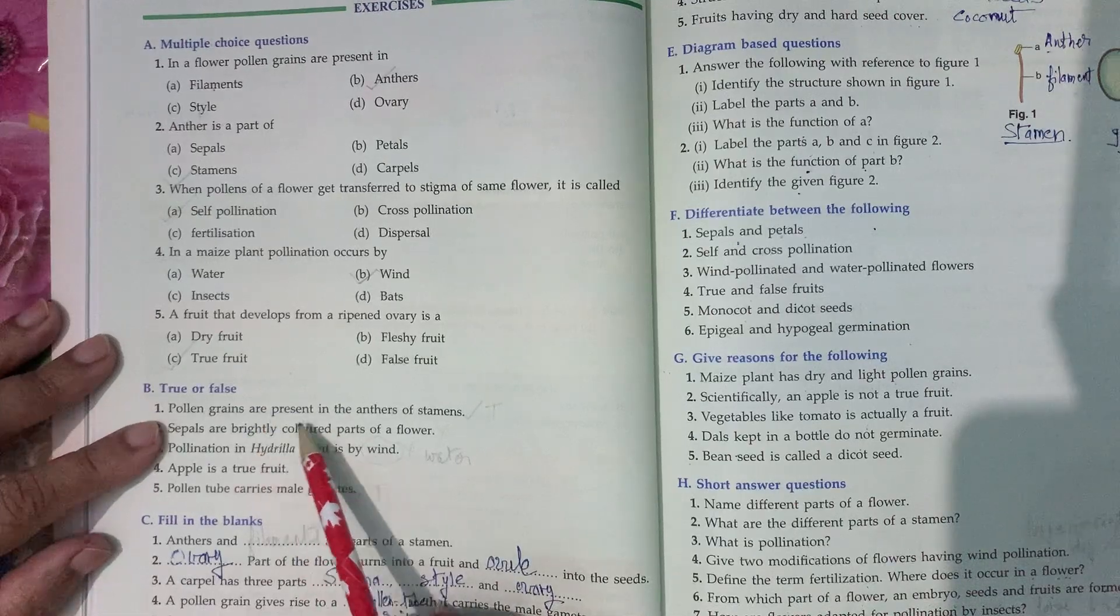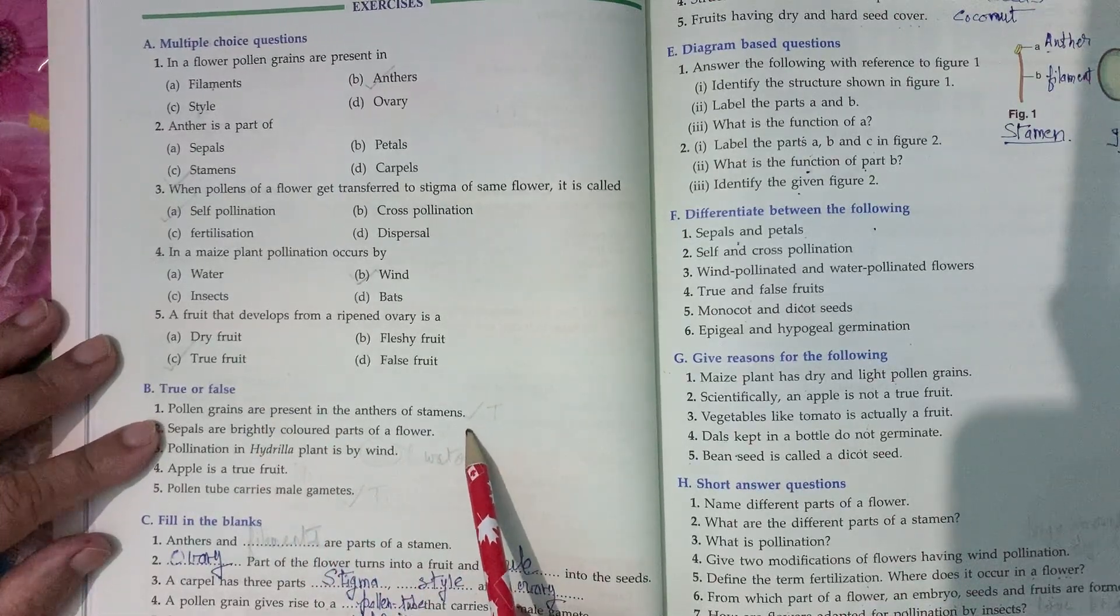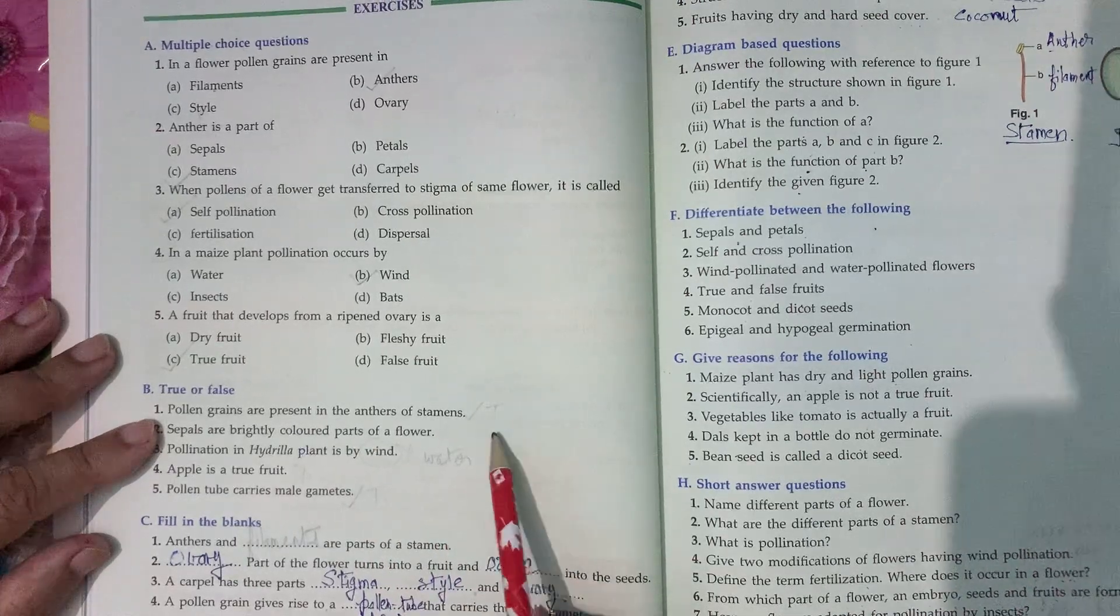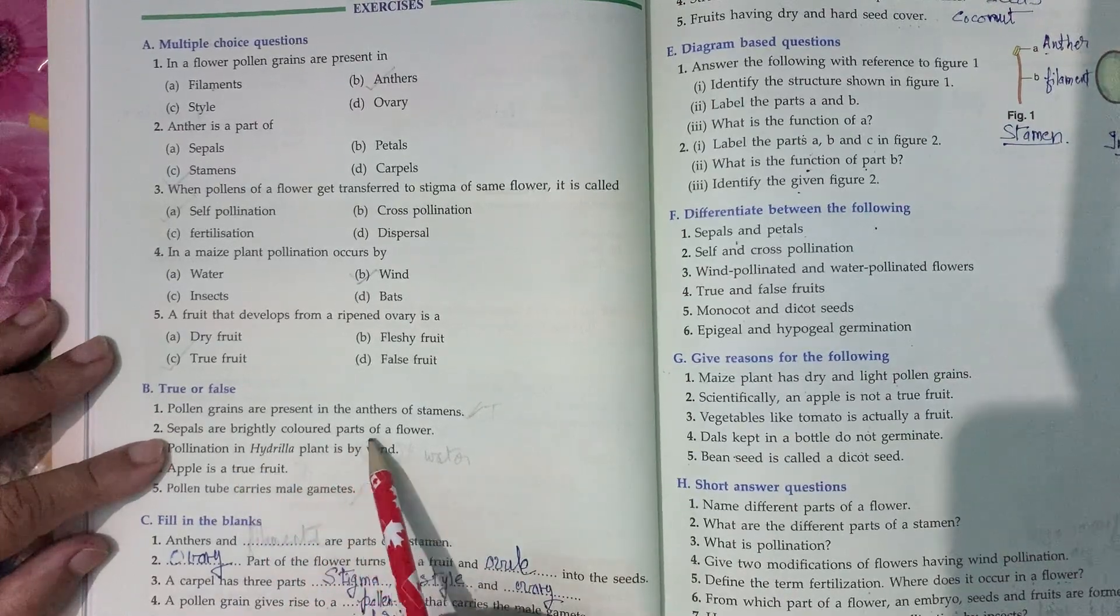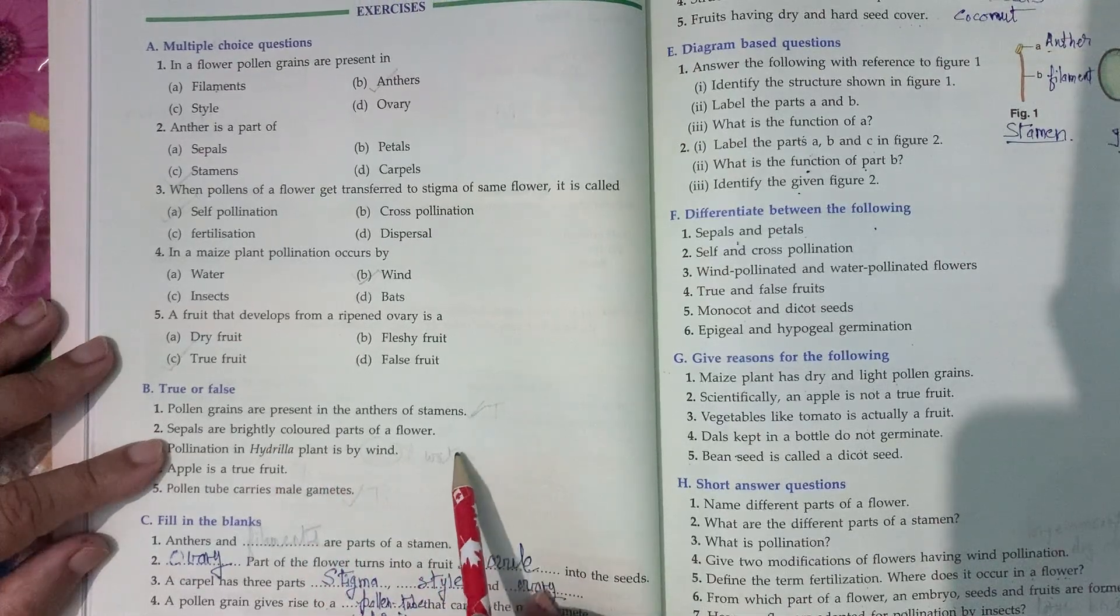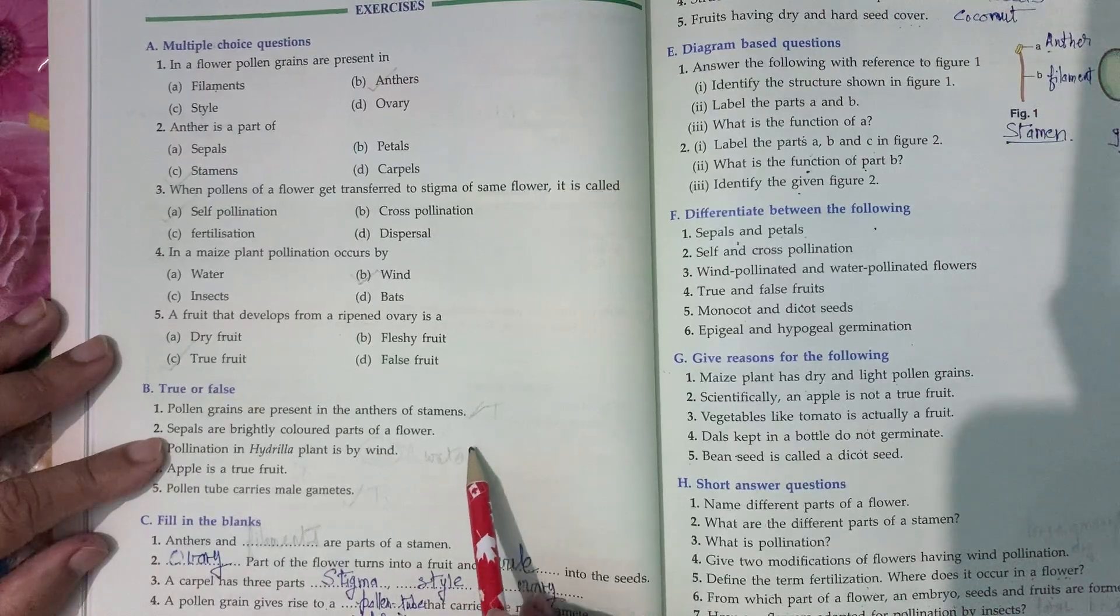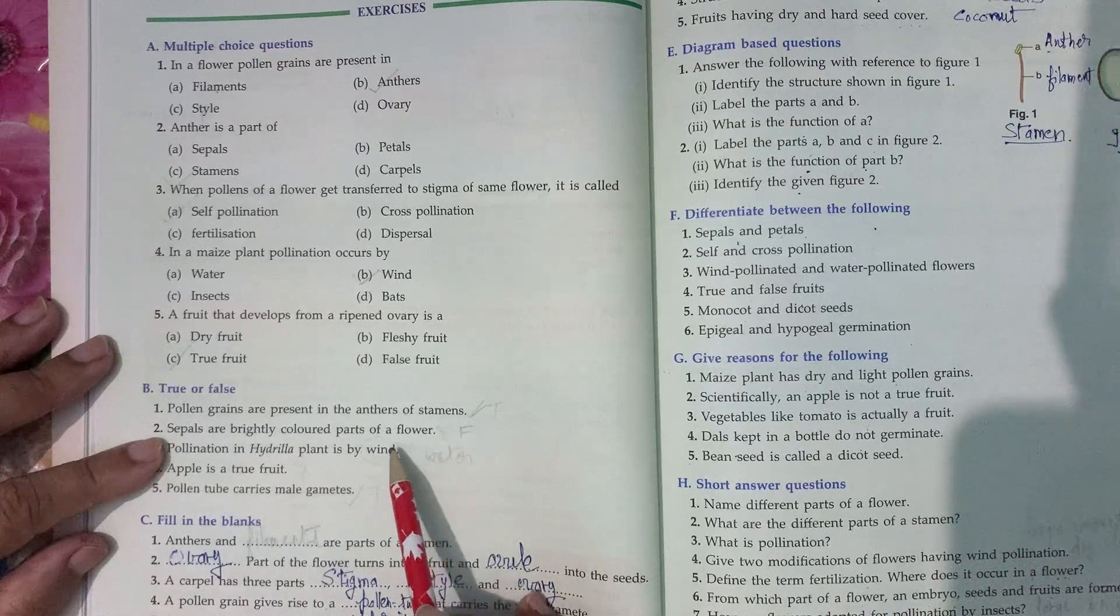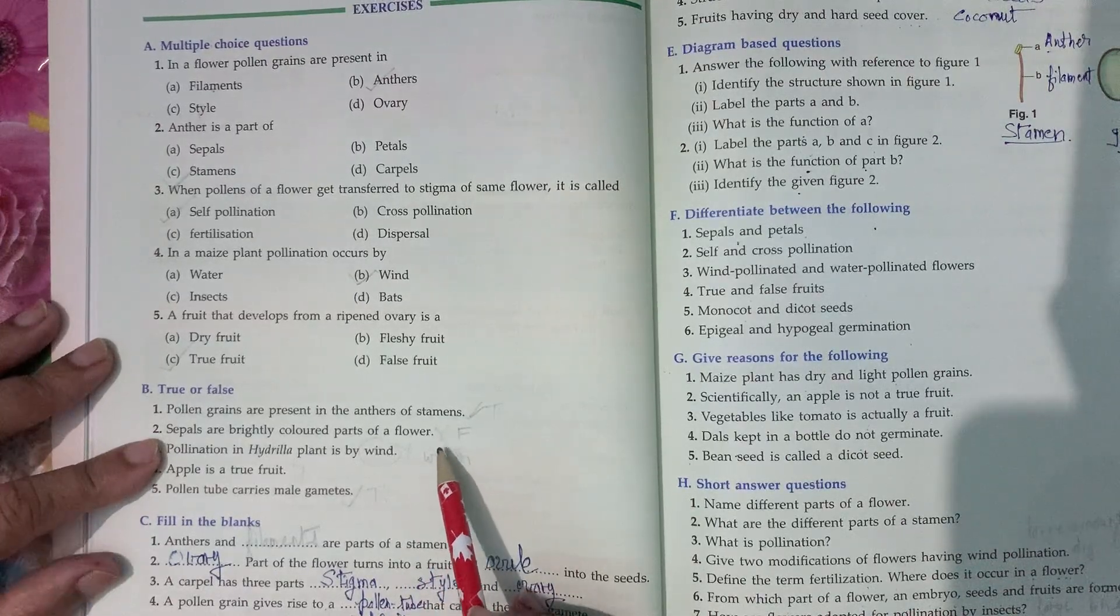Next, true or false. Pollen grains are present in the anther of stamens. Yes, the statement is true. Sepals are brightly colored parts of a flower. No, sepals are green colored part. It is a false statement. Sepals are green colored parts which also take part in photosynthesis.